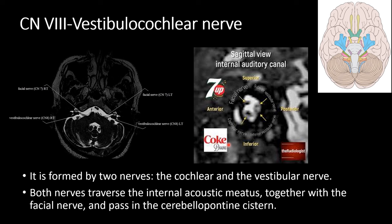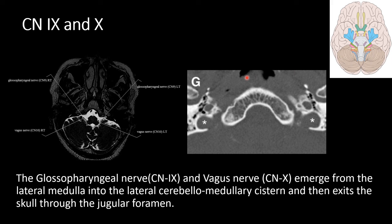The 9th and 10th nerves — the glossopharyngeal and vagus nerves — both emerge from the lateral medulla into the lateral cerebellomedullary cistern and exit the skull through the jugular foramen.